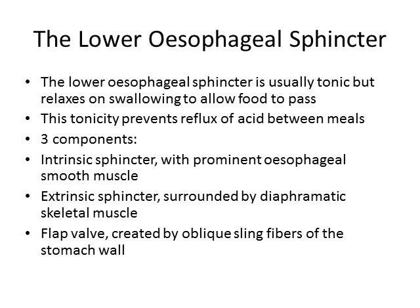In the stomach itself, there are sling muscle fibers in the stomach wall, and they also form a flat valve type mechanism that contributes to the lower esophageal sphincter.